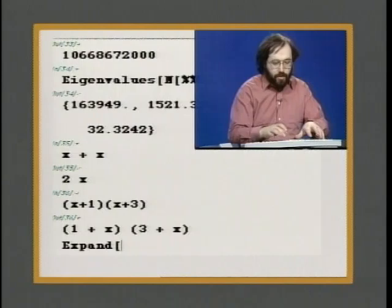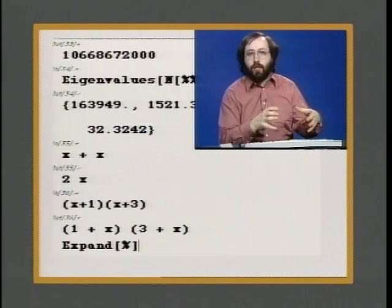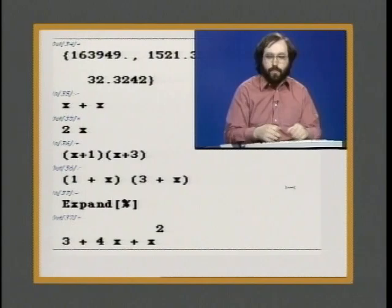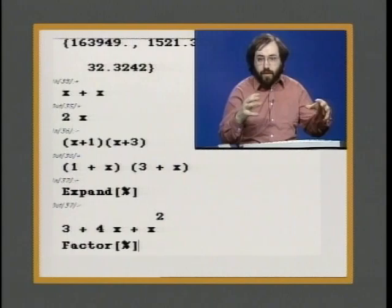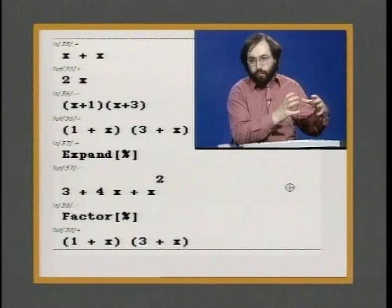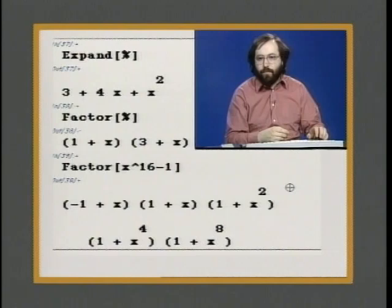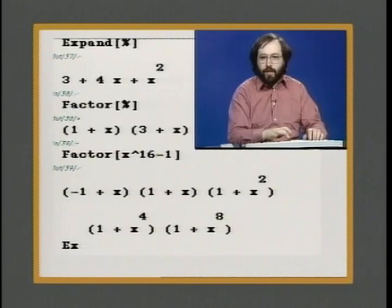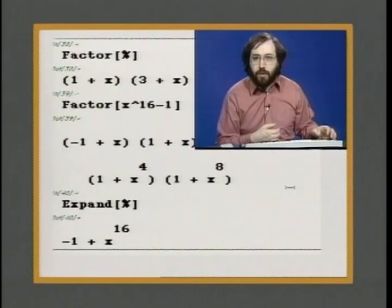We can explicitly use the Mathematica command expand, and now we'll see this expression expanded out into a flat polynomial. We can use the Mathematica function factor to take this expanded form and reduce it back down to a product of two factors. We could also ask Mathematica to factor the expression x to the 16 minus 1 — there's the factorization of it. If we now ask Mathematica to expand this, we'll get back the original form x to the 16 minus 1.